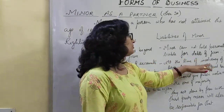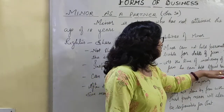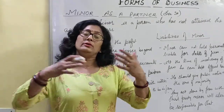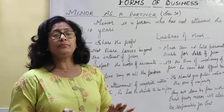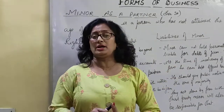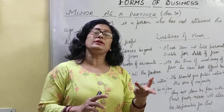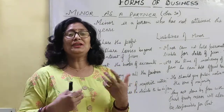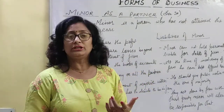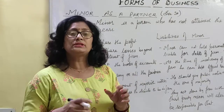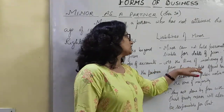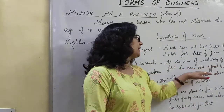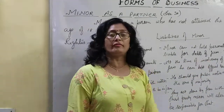At the time of insolvency of the firm, the minor can keep an official assignee. If the minor is in the firm and the firm becomes insolvent — aisi condition mein — you are unable to pay the debts, and the minor always has this insecurity that cheating may happen with him because he is a minor and his rights can be overlooked. So, he has the right to keep an official assignee at the time of insolvency of the firm.